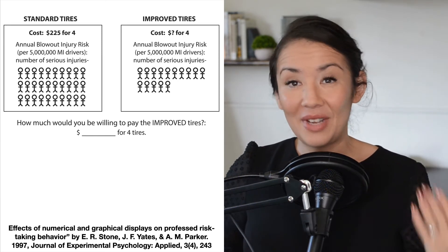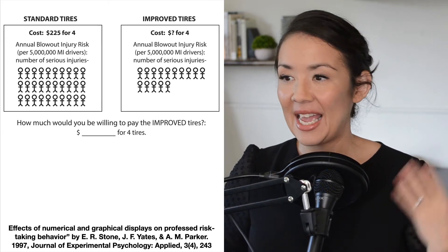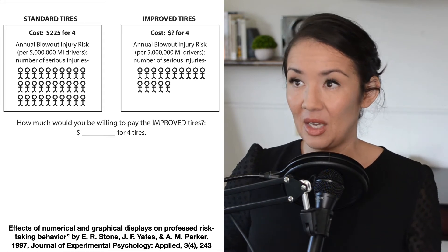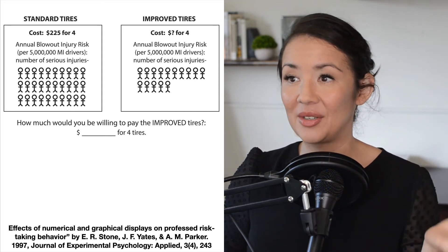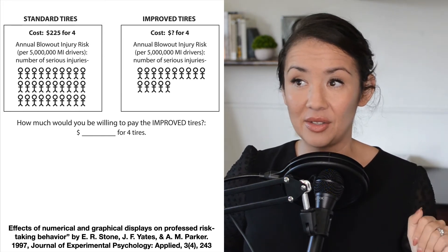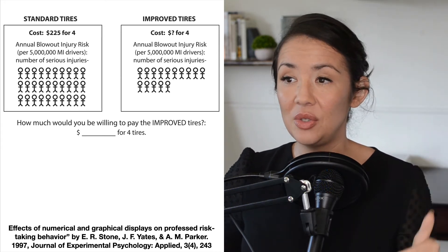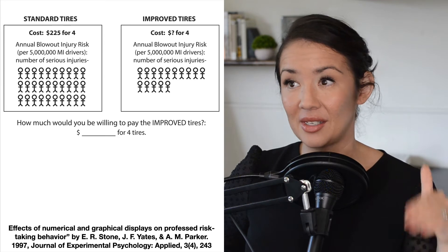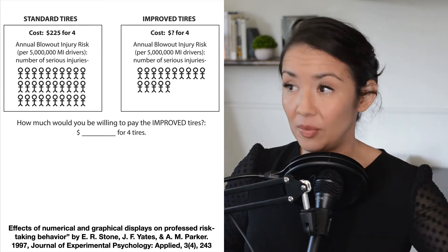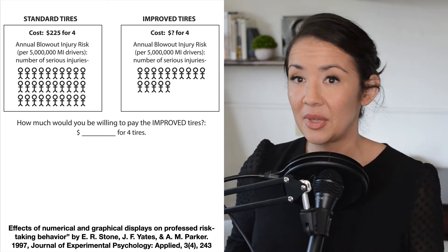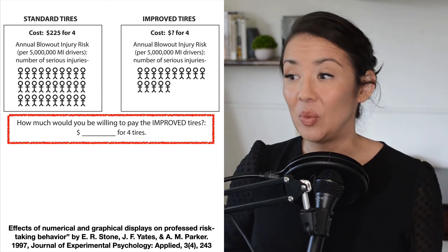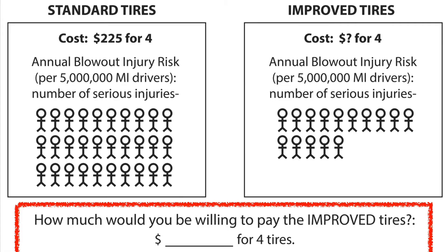This is one of my favorite examples of base rate neglect. I'd like you to look at this figure showing standard tires on the left and improved tires on the right. It shows the cost for the standard tires, which is $225, and the number of serious injuries for each. The image on the right shows the improvement in injury for the improved tires. I'd like you to decide right now how much you would be willing to pay for the improved tires.